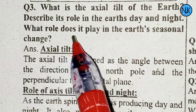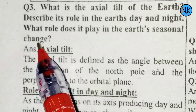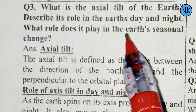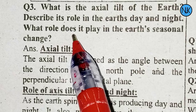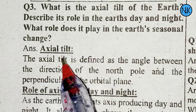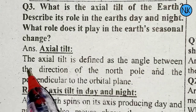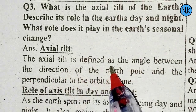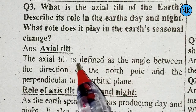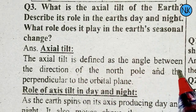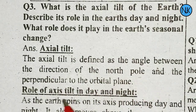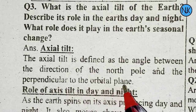What role does axial tilt play in the Earth's seasonal change? The axial tilt is defined as the angle between the direction of the north pole and the perpendicular to the orbital plane.